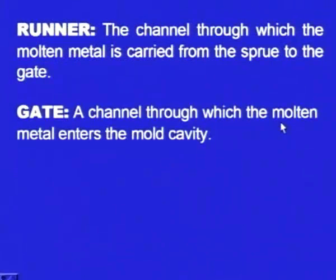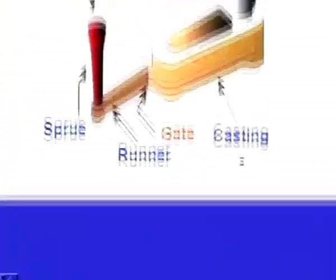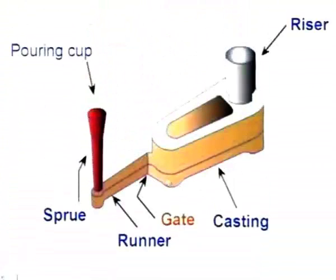Next is the gate. It is the channel through which the molten metal enters into the mould cavity. Through this gate, the molten metal passes into the cavity.